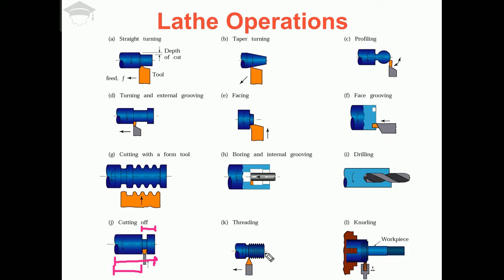Threading means to create a thread — either a left-hand thread or right-hand thread — by using a special lead screw mechanism. We create the threads using a conical tool that is set in place, and by using the lead screw mechanism the threads are generated. This operation is known as the threading operation.